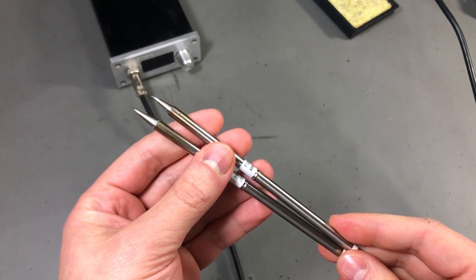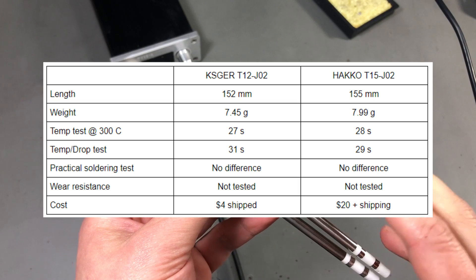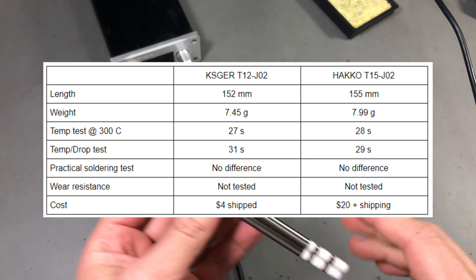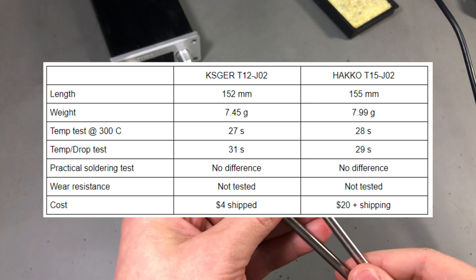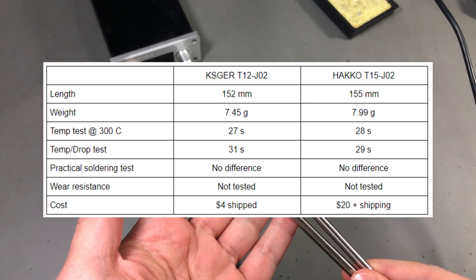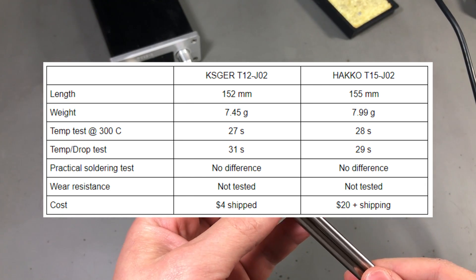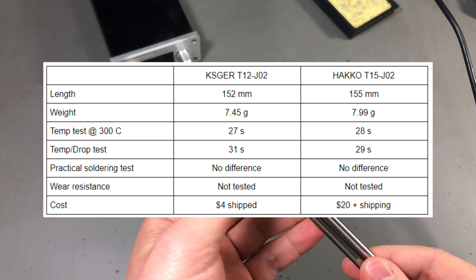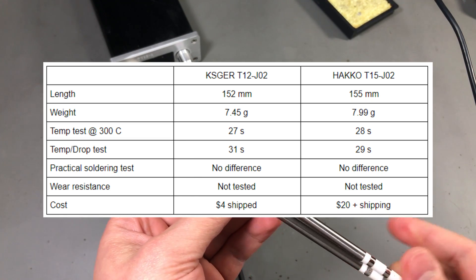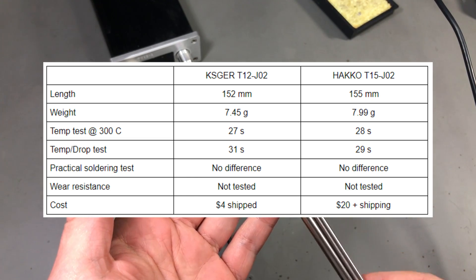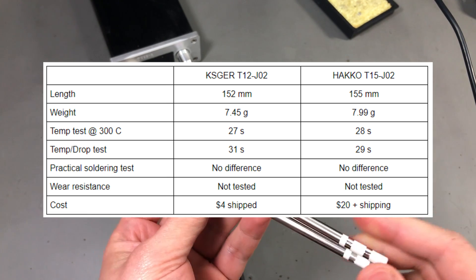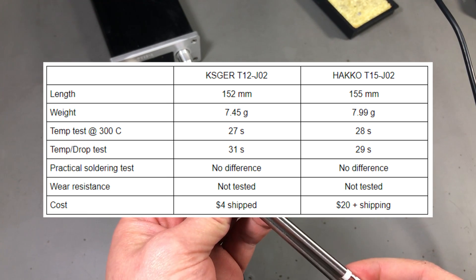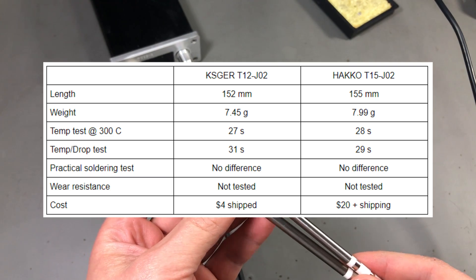So here are my conclusions at the end of this test. I did this small comparison table and I'm gonna go ahead and call it there are no obvious differences between these two. Certainly not something that would justify paying 5 times as much plus shipping for the genuine tip.